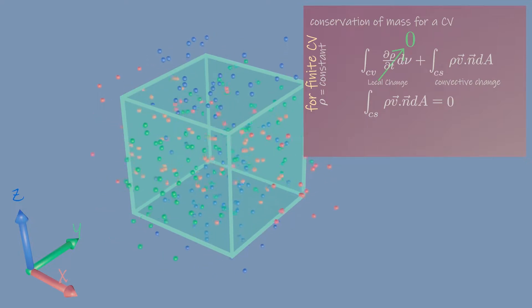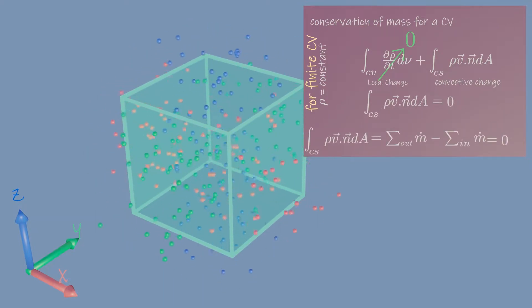For well-defined inlet and outlet, this equation can be written like this. This equation applies to any control volume, regardless of its size.